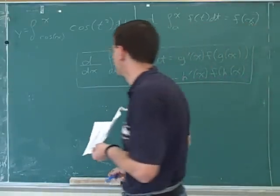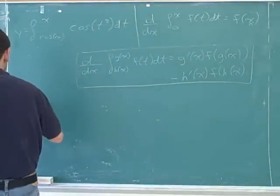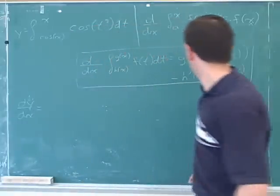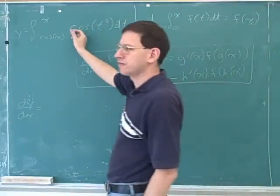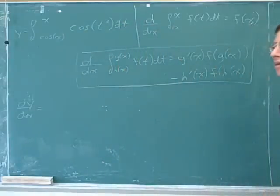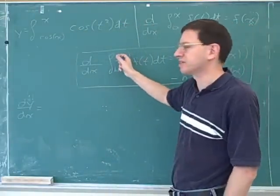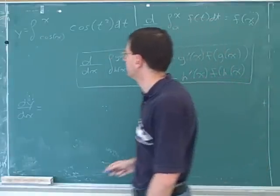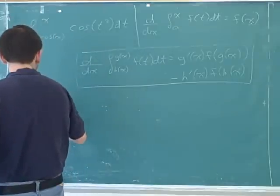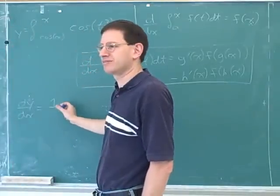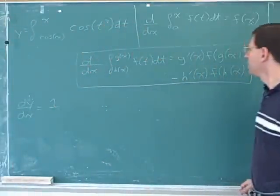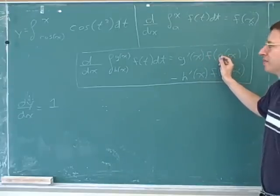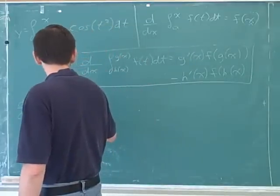Let's go through this example and it'll be easier to see how to work with this. So derivative of y with respect to x equals... what is our g prime going to be for this example? One. Yeah — g prime is the derivative of the top limit of integration. G is the top limit, and g prime is its derivative. Here our top limit is x, and its derivative is one. And now f is the function in the integral, and we evaluate it at g, which is the top limit.